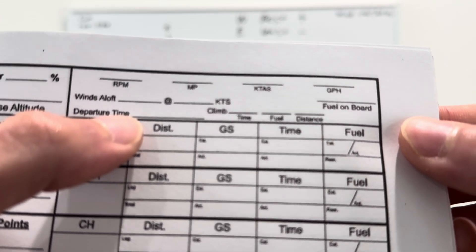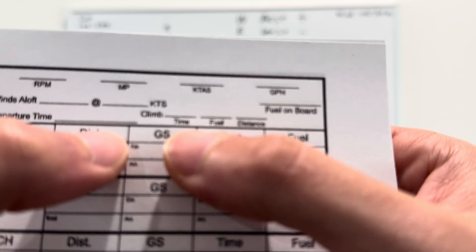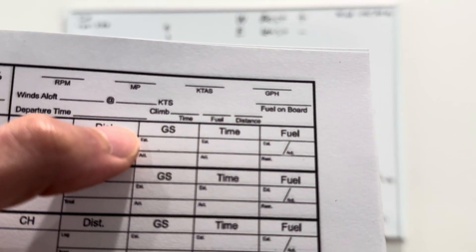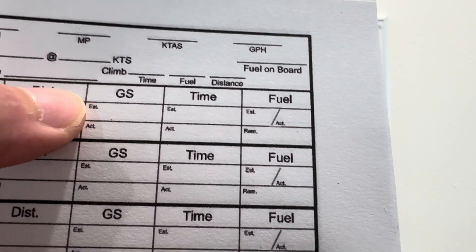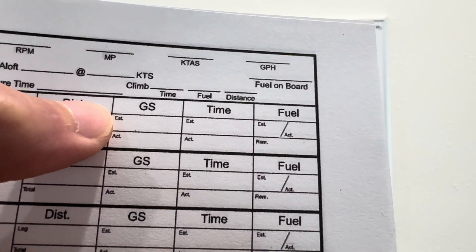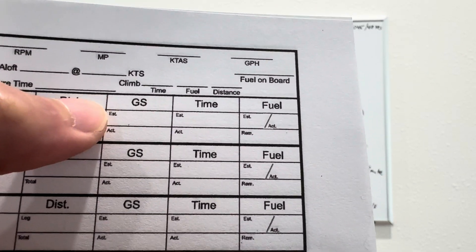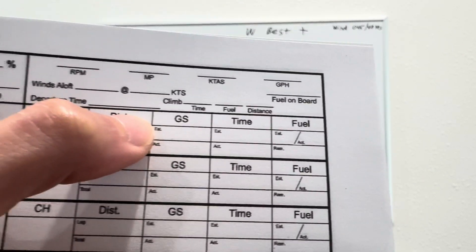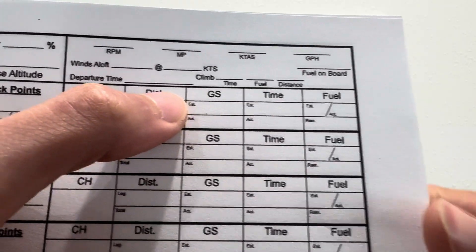MP is manifold pressure. We do not have that. True airspeed is 96. Our gallons per hour is 4.9. Our winds aloft is 045 at 40 knots. Our fuel on board is 22.5 gallons. That's from the POH. That's your usable fuel in the 150. Departure time, you would put 9 a.m. And then here is what I'm talking about with the climb, the time and fuel distance. You would put, from the POH, how long it would take to climb to 3,500 feet and how much fuel that would burn and how far you would go. That is an exact chart in the POH.